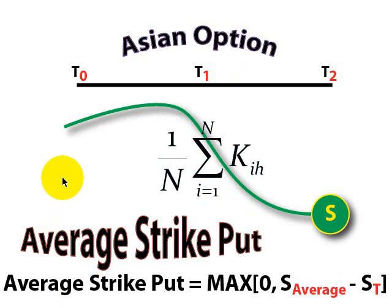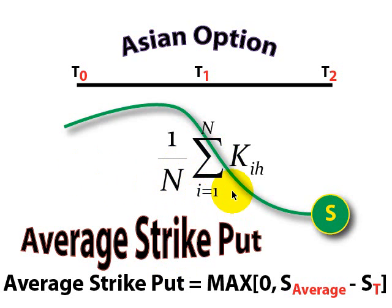We can now get a sense of the eight different variations of the Asian option. We have two types of calls: an average price call and an average strike call. Similarly, we have two types of puts, giving us four Asian option types in total. And finally, we could average either arithmetically or geometrically — two ways to average. So for the four combinations, we actually have eight combinations in total, because there are two ways to average.